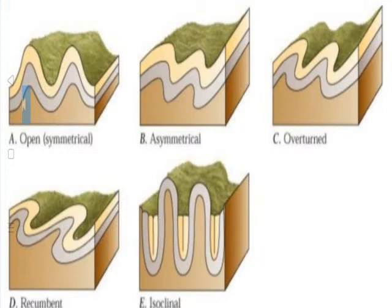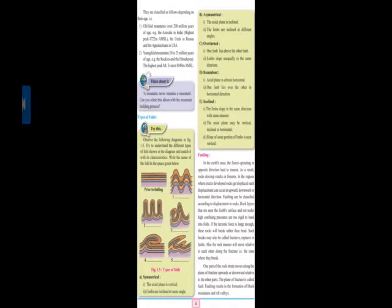Isoclinal - the limbs slope in the same direction with the same amount, also in the same direction. The axial plane may be vertical, inclined, or horizontal. The slope of some portion of the limbs is near vertical. Look at the figures and you will be able to solve and understand all the types of folds.